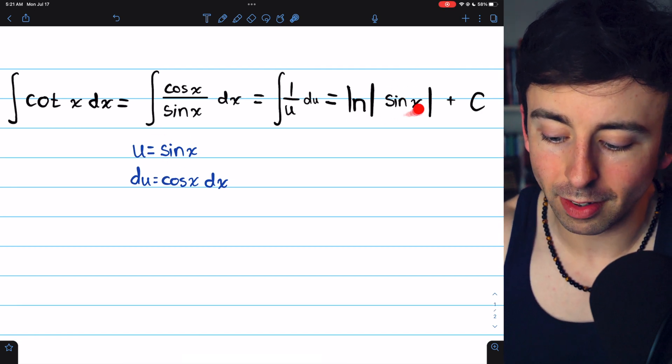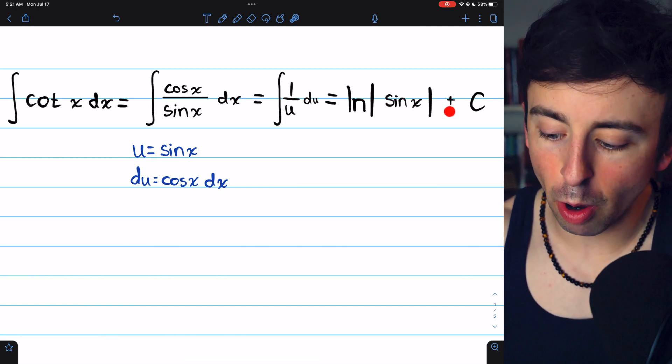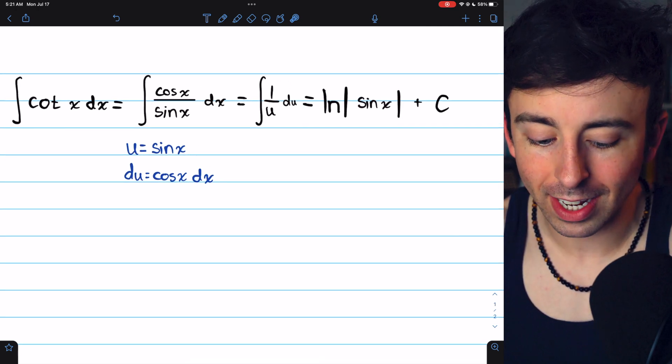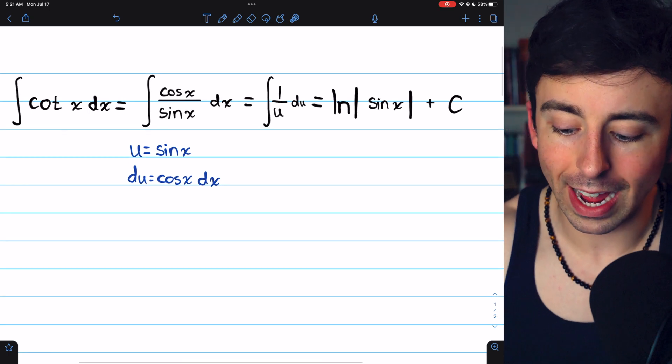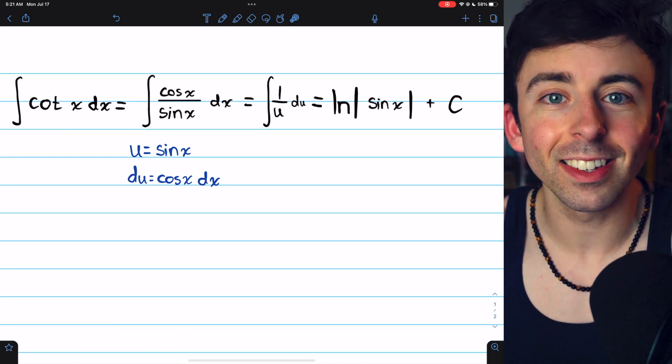u, of course, is sine x, so we just pop that back in at the end, and then throw on the arbitrary constant. That's the integral of cotangent x, the natural log of sine x plus c.